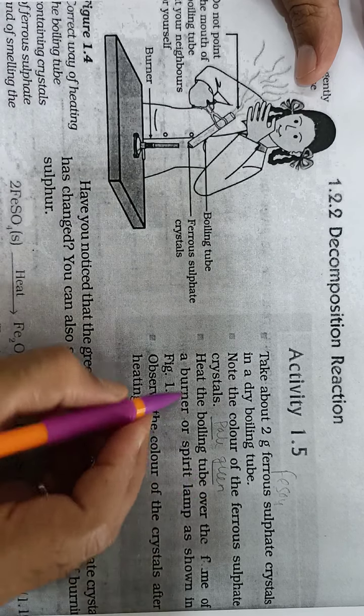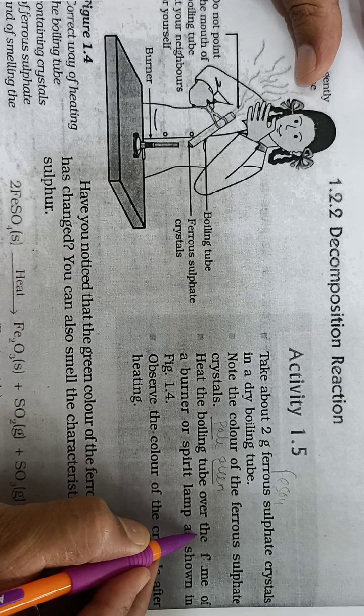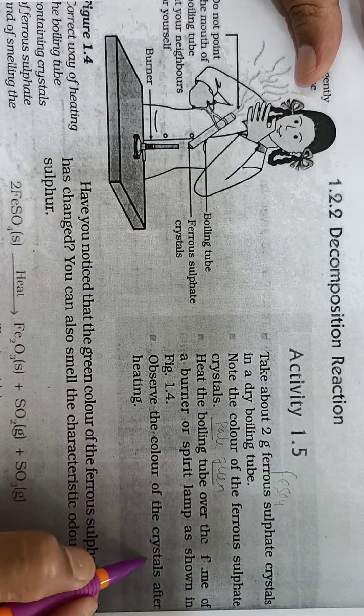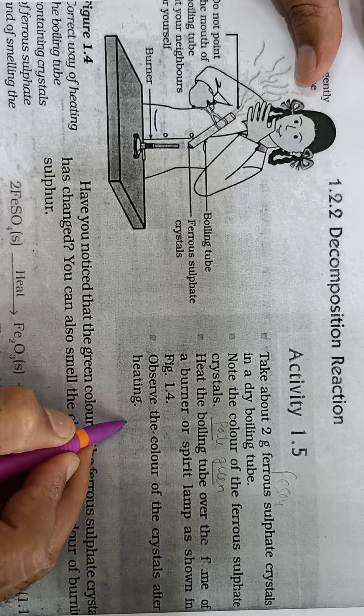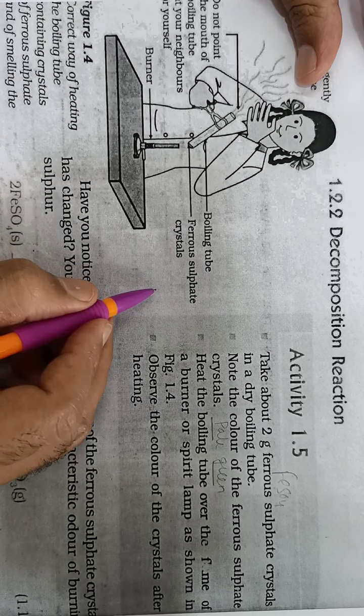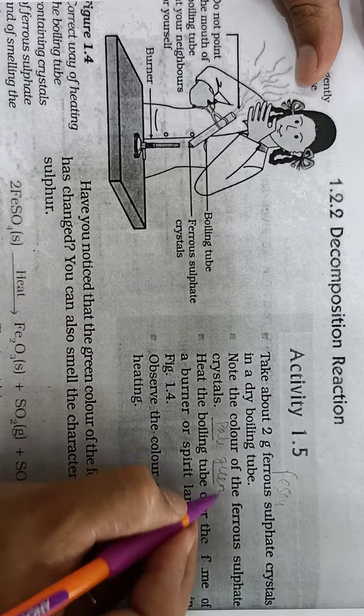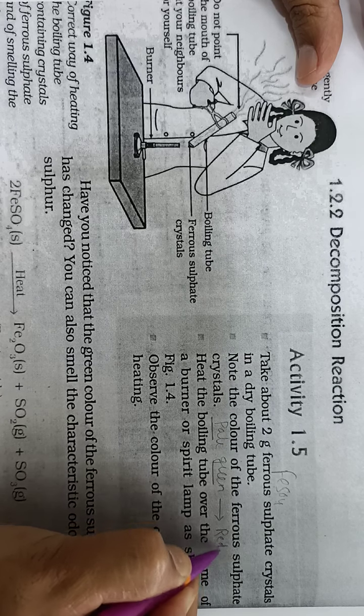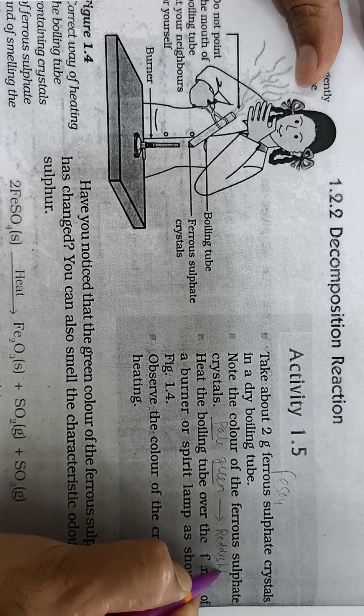Pale green color. Heat the boiling tube over the flame. We are heating it and observe the color of the crystal after heating. As we heat, the color of the crystal changes from pale green to reddish brown.